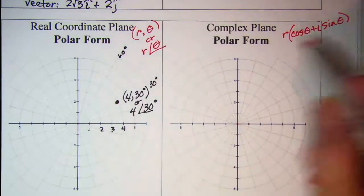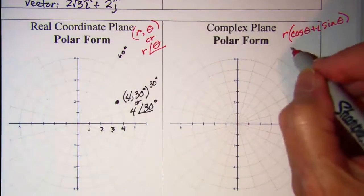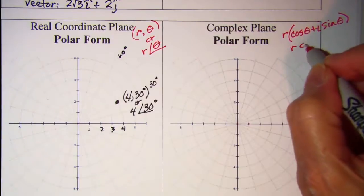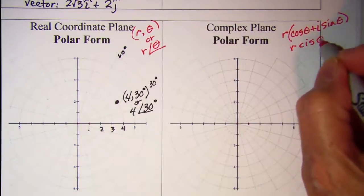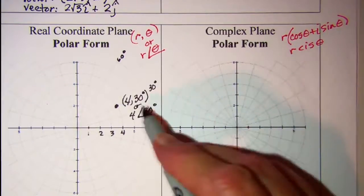And this does have a shortcut. So instead of having to write all of this you may write r cis θ. So for this same point...